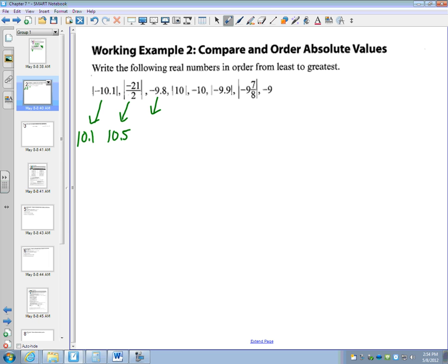Negative 9.8. No absolute value, so it's going to remain negative 9.8. The absolute value of 10 is 10. Negative 10 doesn't have absolute value bars, so that's going to stay as negative 10. The absolute value of negative 9.9 is 9.9. Here comes another one.